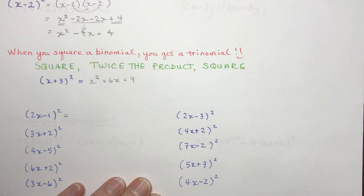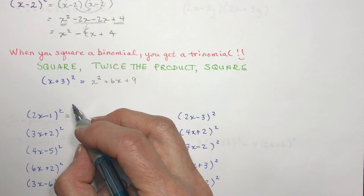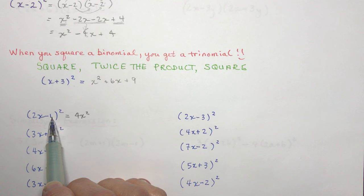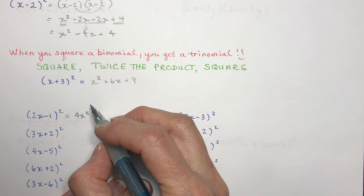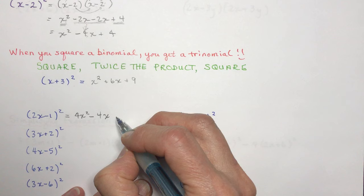Now (2x − 1) squared. Square the first term: (2x) squared is 4x squared. The product of 2x times −1 is −2x, twice that is −4x. And square the last term: (−1) squared is +1. So we get 4x squared minus 4x plus 1.